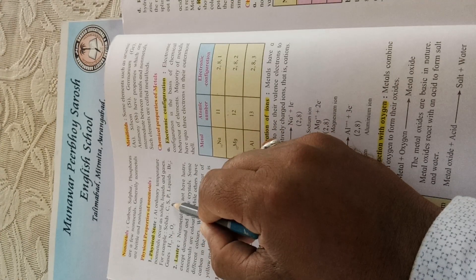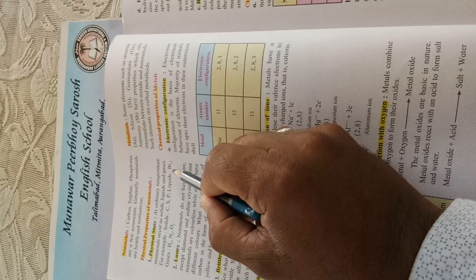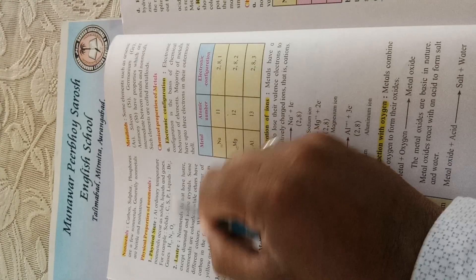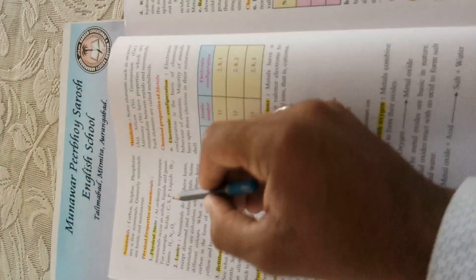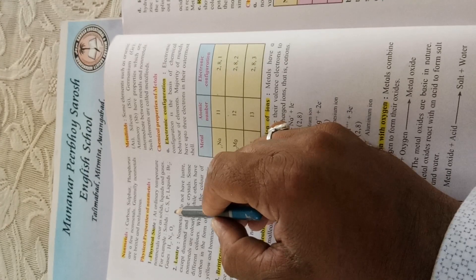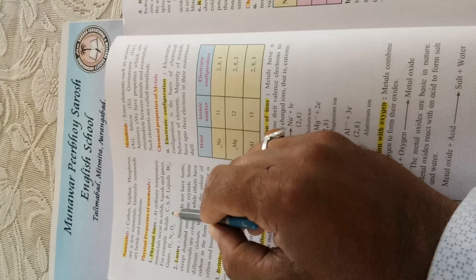...carbon, sulphur, and phosphorus. Liquids include bromine. Gases include hydrogen, nitrogen, and oxygen. So this proves that nonmetals exist in all three states: solid, liquid, and gas.